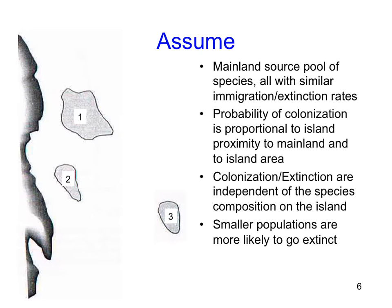The main assumptions for MacArthur and Wilson's theory are as follows. First, there's a mainland source pool of all species that could possibly migrate to an island, and all species in that pool have similar probabilities of immigration and extinction from an island. Second, the probability of colonization on an island is proportional to its proximity to the mainland — so islands one and two, which are close to shore, have higher colonization probability than island three, which is quite distant.